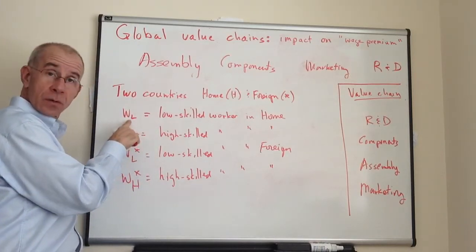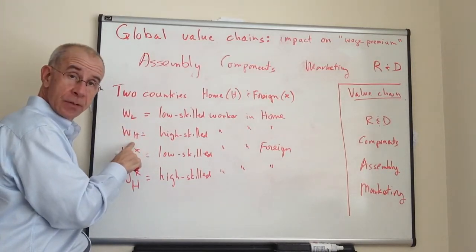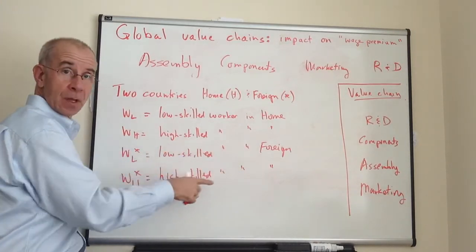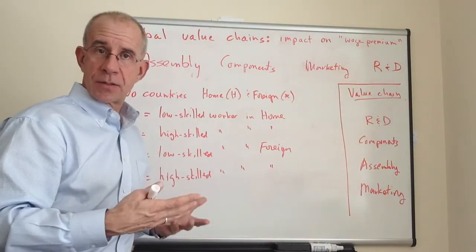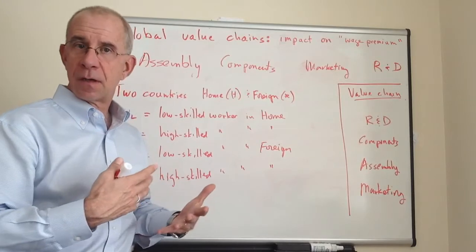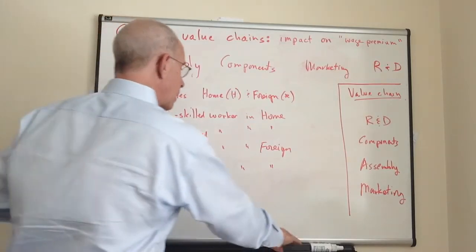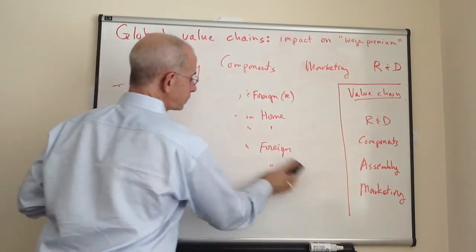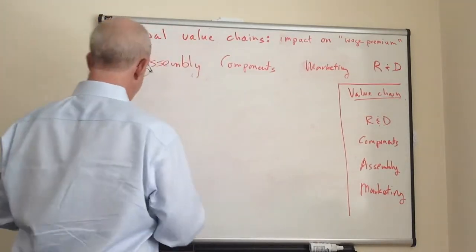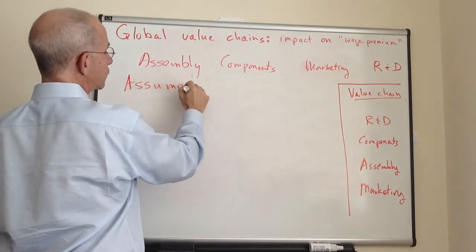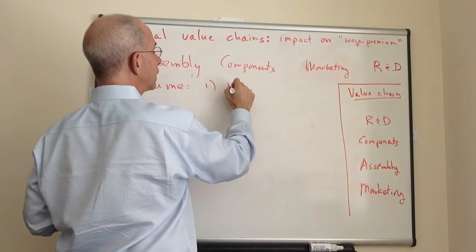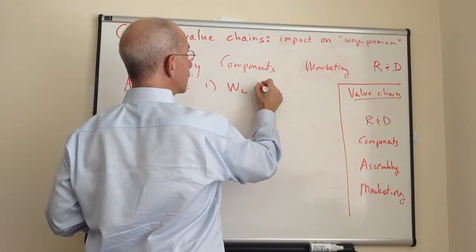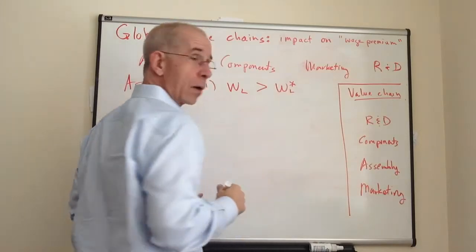We've got the low-skilled workers' wage in the home country, the high-skilled wage in the home country, and the analogs designated by stars in the foreign country. These underlying wages are going to be determined by the interaction of supply and demand in the two markets. Now we want to make a couple of assumptions about the relationships among these wages. We're going to assume that the low-skilled worker wage in the home country is greater than the low-skilled worker wage in the foreign country.